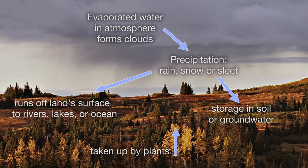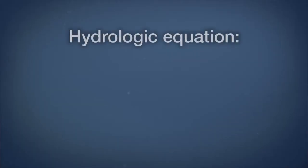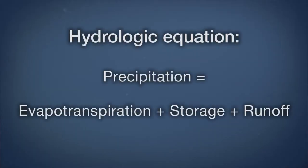We can describe these events through the hydrologic equation: precipitation equals evapotranspiration plus storage plus runoff, or P = ET + S + RO.